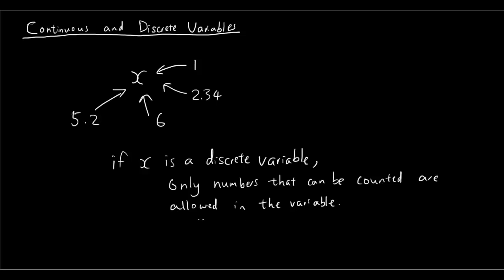So what does that mean? That means if x is a discrete variable, then we're not going to allow these numbers here. For example, no decimals and integers only. No decimals and usually we allow integers only.